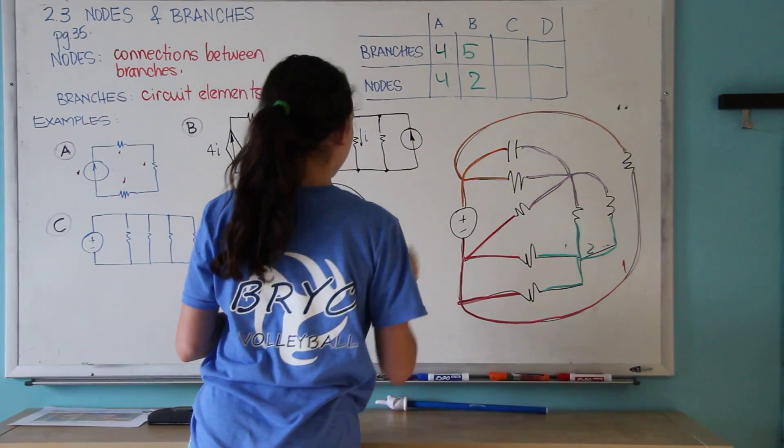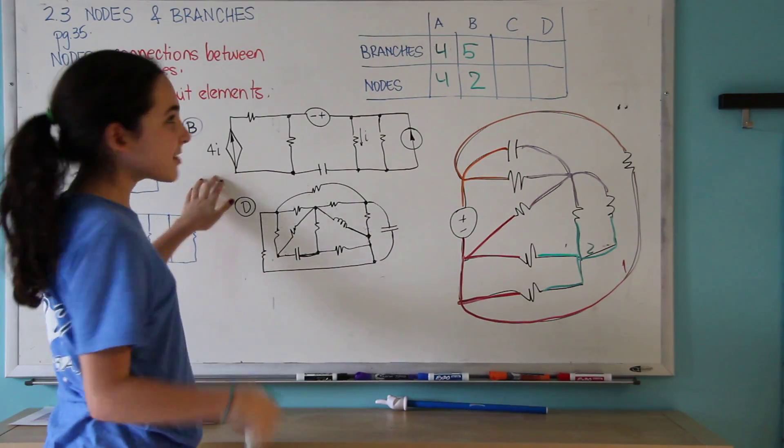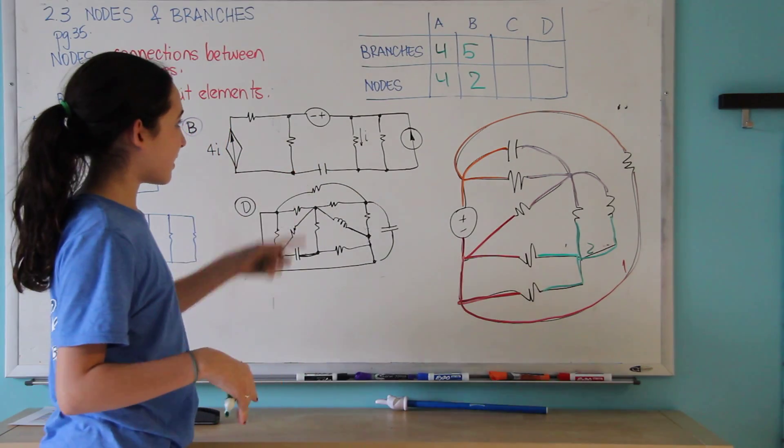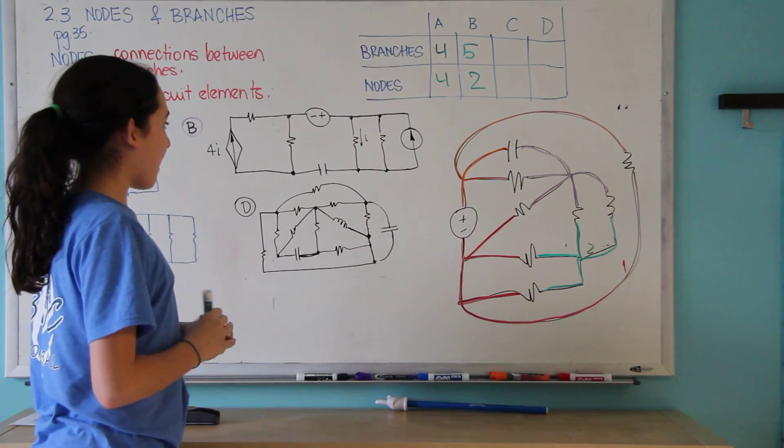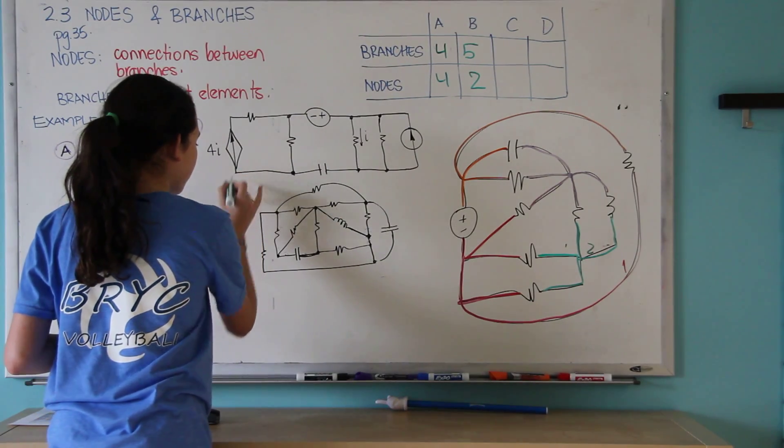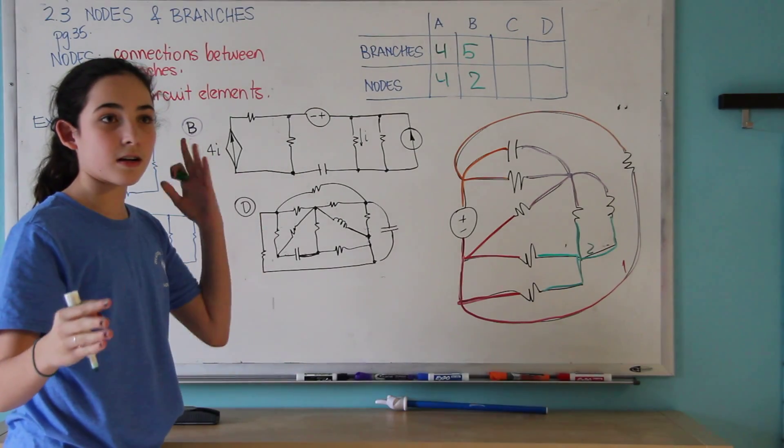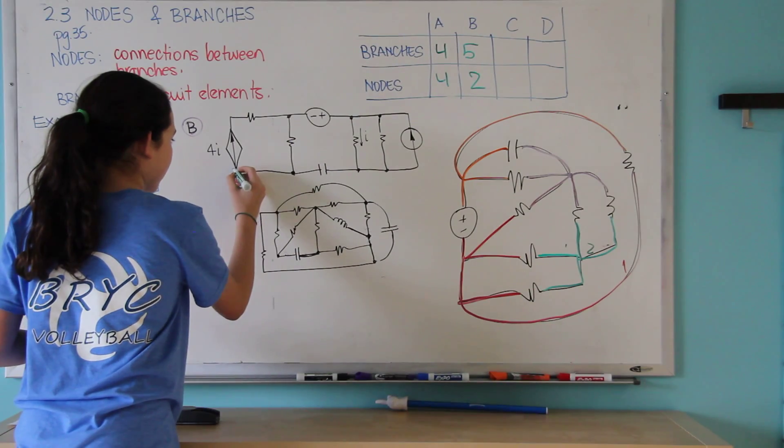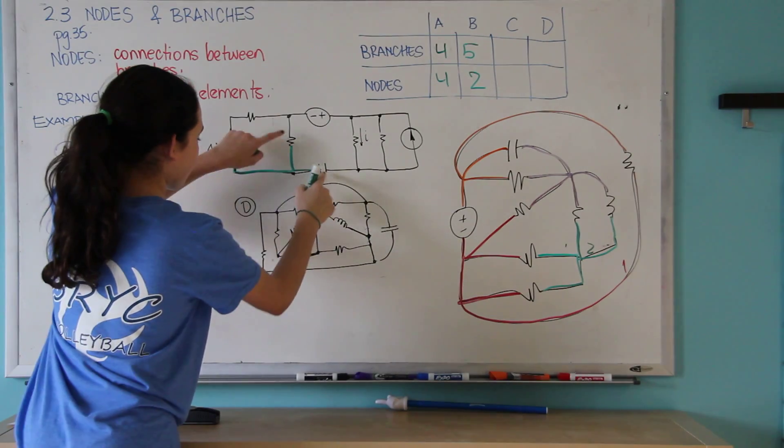So now get your colored pencils out because when there are more than two nodes, then you need to tell which one's which. Nodes only stop when there are branches. So you can start here at a branch and keep going until there are branches.